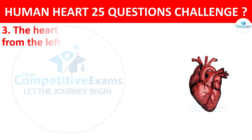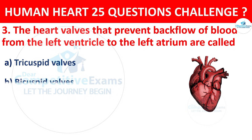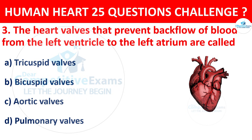Question number 3. The heart valve that prevents backflow of blood from the left ventricle to the left atrium is called: Tricuspid valve, Bicuspid valve, Aortic valve, or Pulmonary valve? The correct answer is B, that is Bicuspid valve.